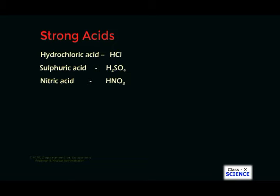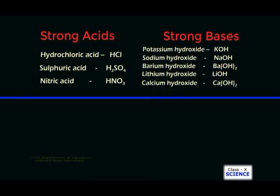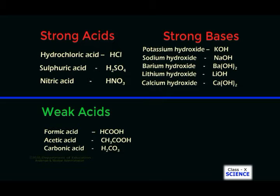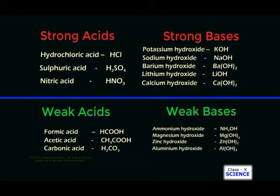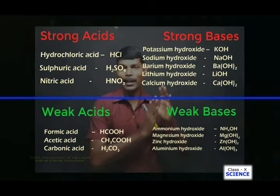Look at the screen. Hydrochloric acid, sulfuric acid, and nitric acid are considered strong acids — all laboratory acids are classified as strong acids. Potassium hydroxide, sodium hydroxide, barium hydroxide, lithium hydroxide, and calcium hydroxide are all strong bases. For weak acids: formic acid, acetic acid, and oxalic acid. Weak bases include ammonium hydroxide, aluminum hydroxide, magnesium hydroxide, and zinc hydroxide.